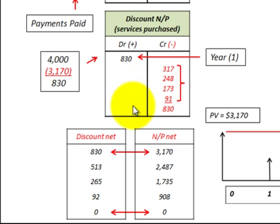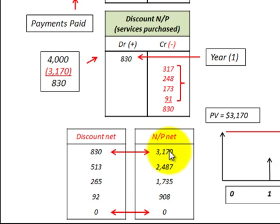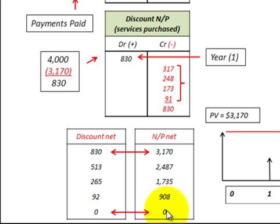Let's look at the effect that this discount to notes payable has on the net amount in notes payable. We started out in the beginning of year one with an $830 discount balance and a present value of $3,170 under notes payable. Each year we reduce that discount by the interest payments until at the end of the fourth year we've got a zero balance in the discount. We also have to take into account that we paid a $1,000 payment at the end of each of the four years, so when we paid our last payment, we got a zero balance in our notes payable, and our discount was also zero.